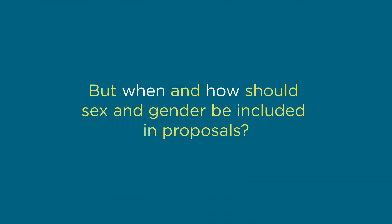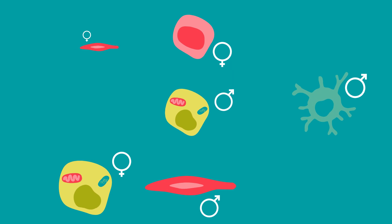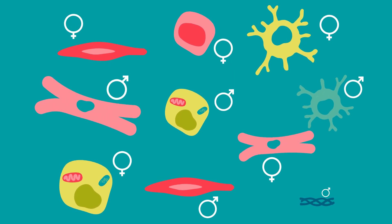Let's start with sex, which refers to the biological attributes of cells, tissues, animals, and humans. Many cell types show sex differences, including stem cells, immune cells, cardiac and lung cells, and brain and muscle cells.